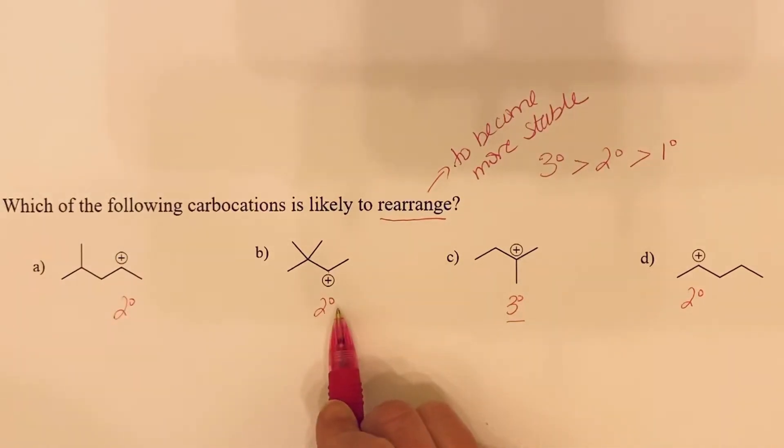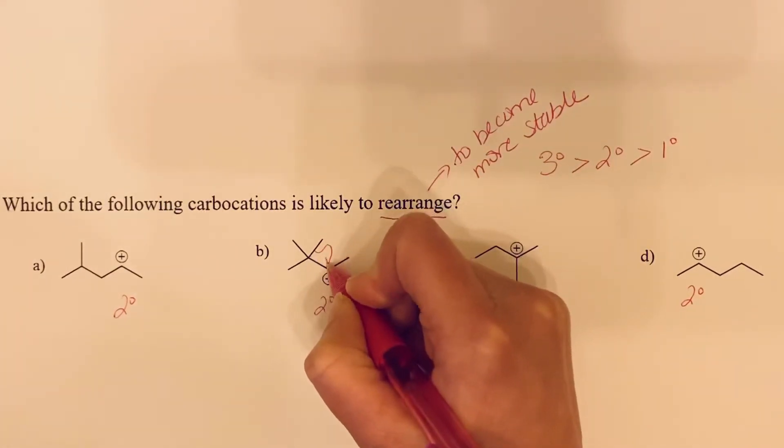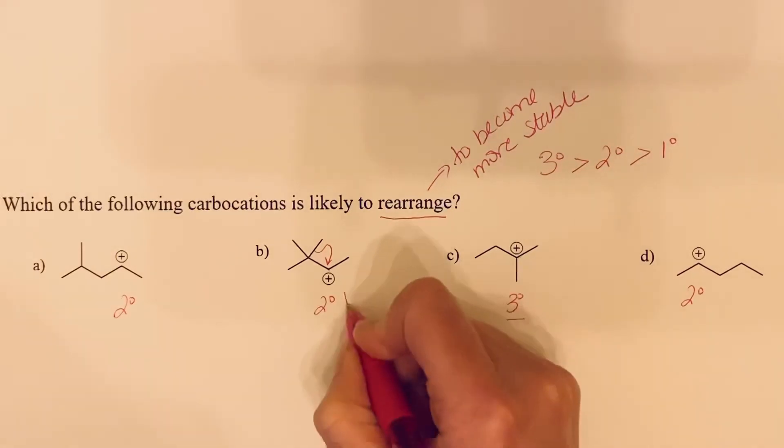If we look at B, on the adjacent carbon atom we have a couple methyl groups. If we were to do a methyl shift here, so we would move this bond, this would give us the following structure.